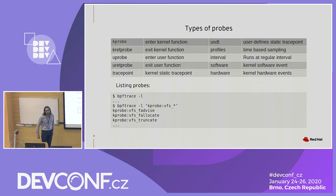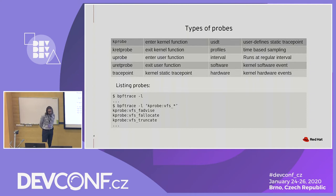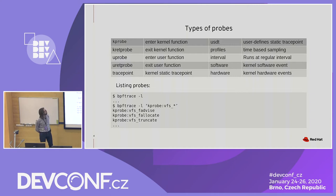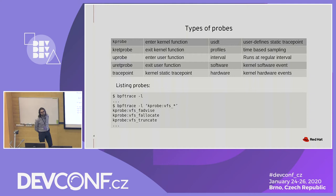Now let's talk about the kinds of probes you can use with BPF trace. First, you have kprobes and kretprobes — these are probes set at the entrance and exit of kernel functions. There, you can also access the arguments of the function or the return value of the function, specifically on kretprobes. Then you have uprobes and uretprobes — that's very much the same thing, but for user space.